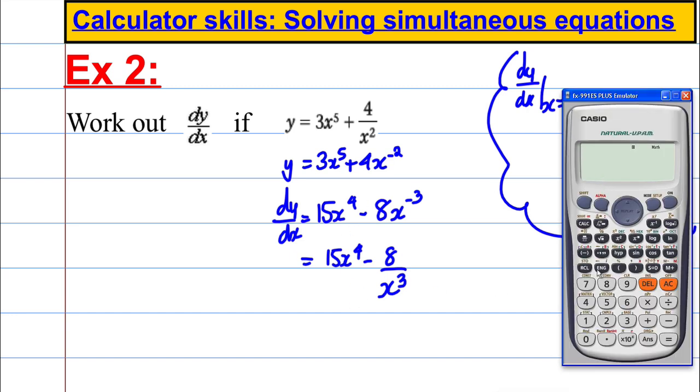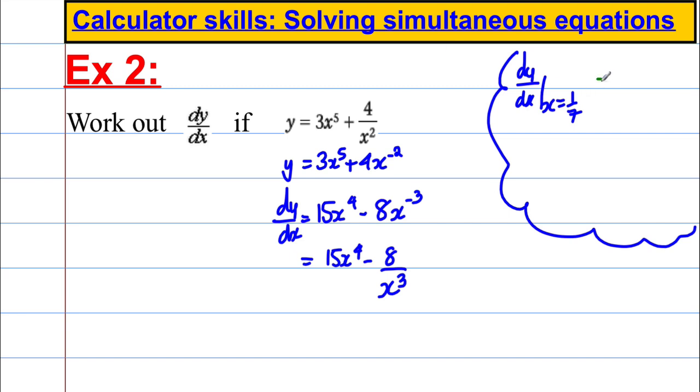So let's actually use the calculator for that substitution. We could say 15 alpha x to the power of 4 subtract 8 over x cubed. And we press calculate, and we're going to say we're going to put x as a 7th in, so 1 over 7. And we get negative 2, 7, 4, 3. Let's just write that down. We get negative 2, 7, 4, 3.